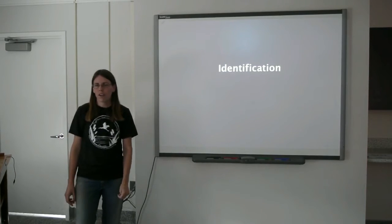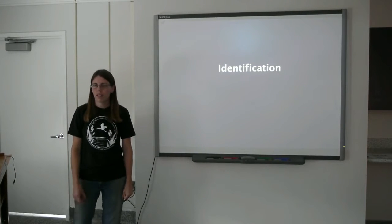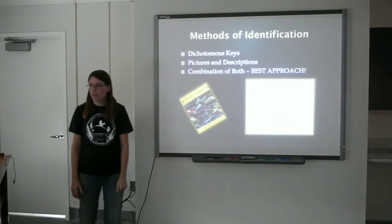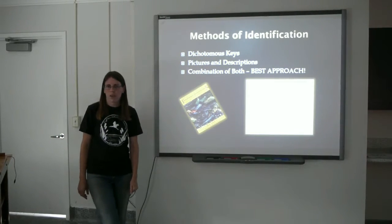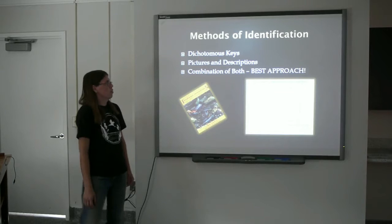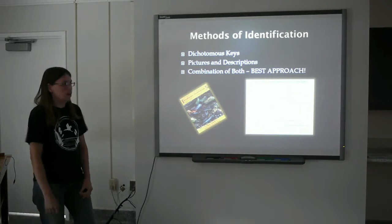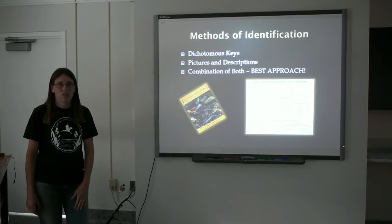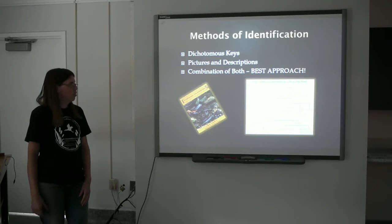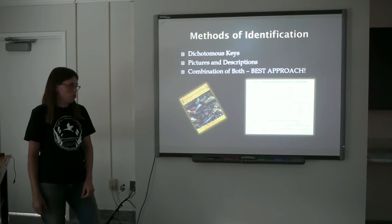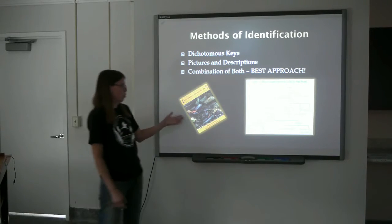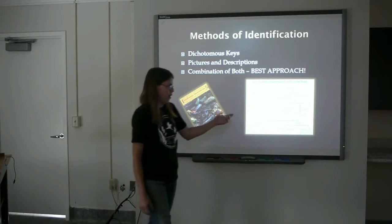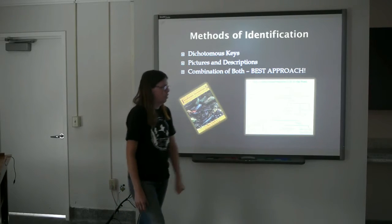Next, we're going to talk about identification methods of macroinvertebrates. There are two ways of identifying macroinvertebrates. The first is with a dichotomous key, and the second method would be a book with pictures and descriptions. I find it's easiest to combine these methods and use both a book with good pictures and descriptions of the families, as well as a good dichotomous key.